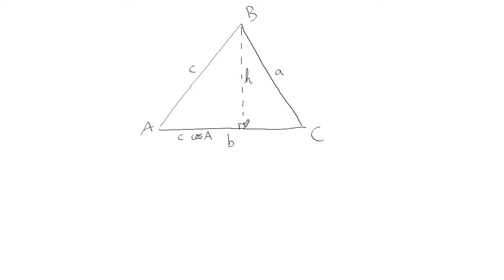And then we can do Pythagoras in that triangle. So we can say c squared equals h squared plus c cos A squared. I'll just expand that.